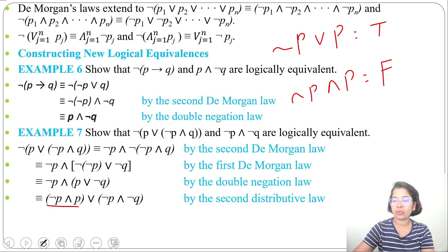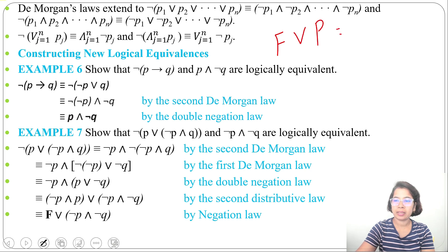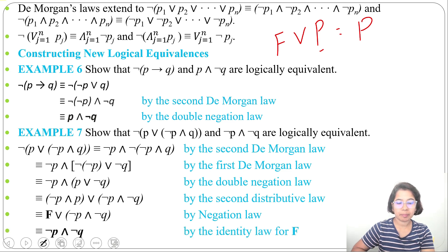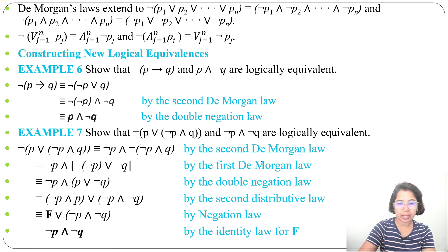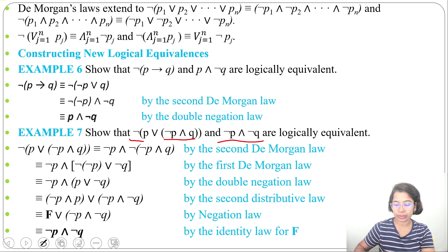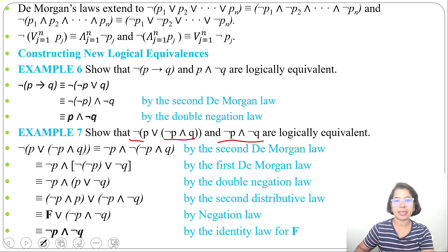For instance, if p is true: (true and false) is false; if p is false: (false and true) is also false. So (negation p and p) is always false. By the identity law, (false or anything) equals that thing itself. Therefore (false) or (negation p and negation q) equals (negation p and negation q). We proved that negation of (p or (negation p and q)) is equivalent to (negation p and negation q), using De Morgan's law, double negation law, distributive law, negation law, and identity law.